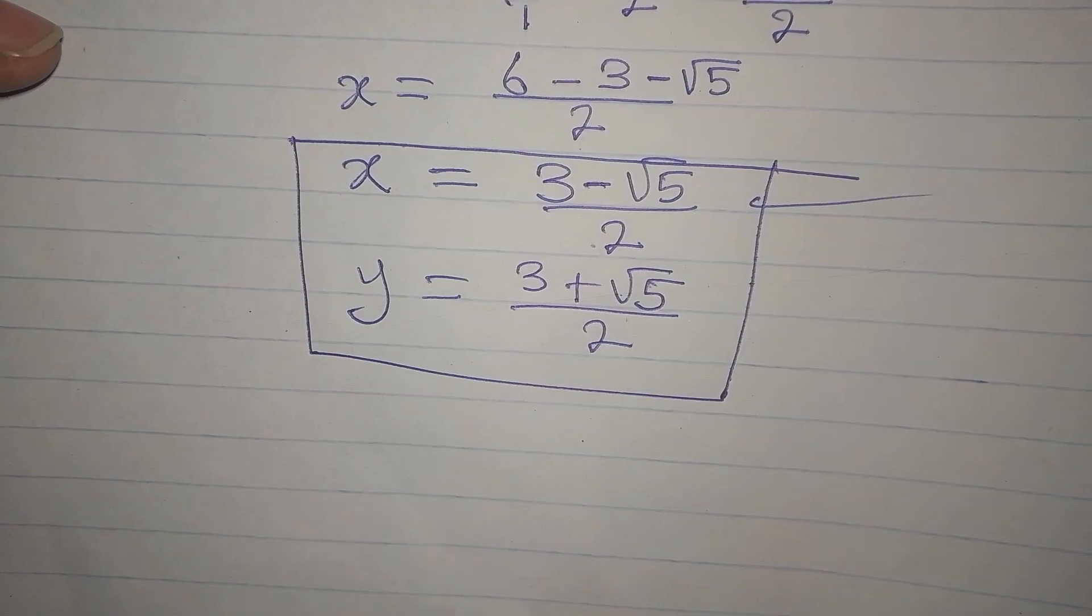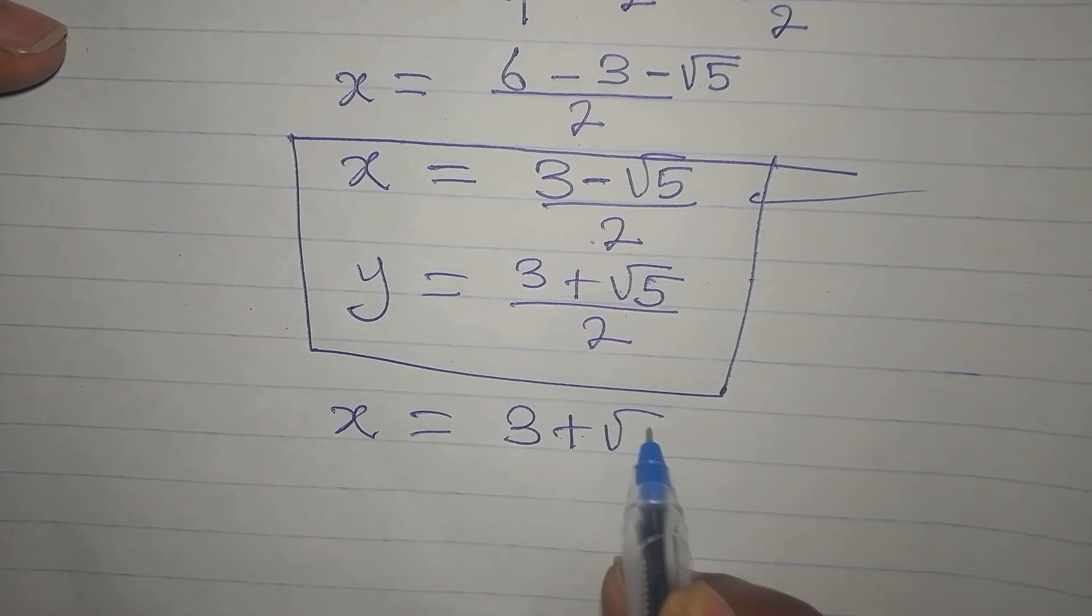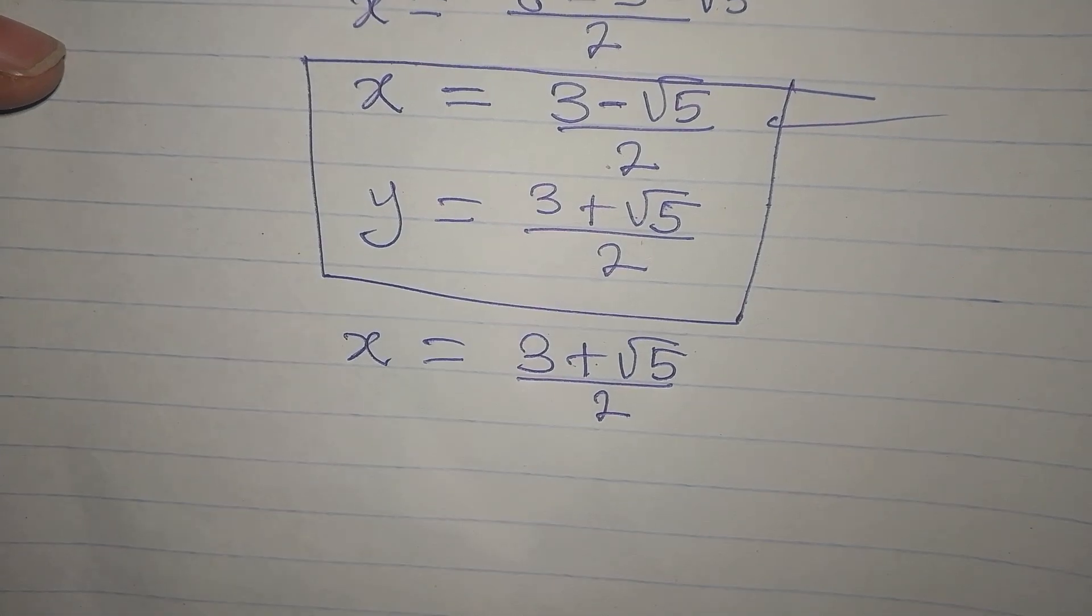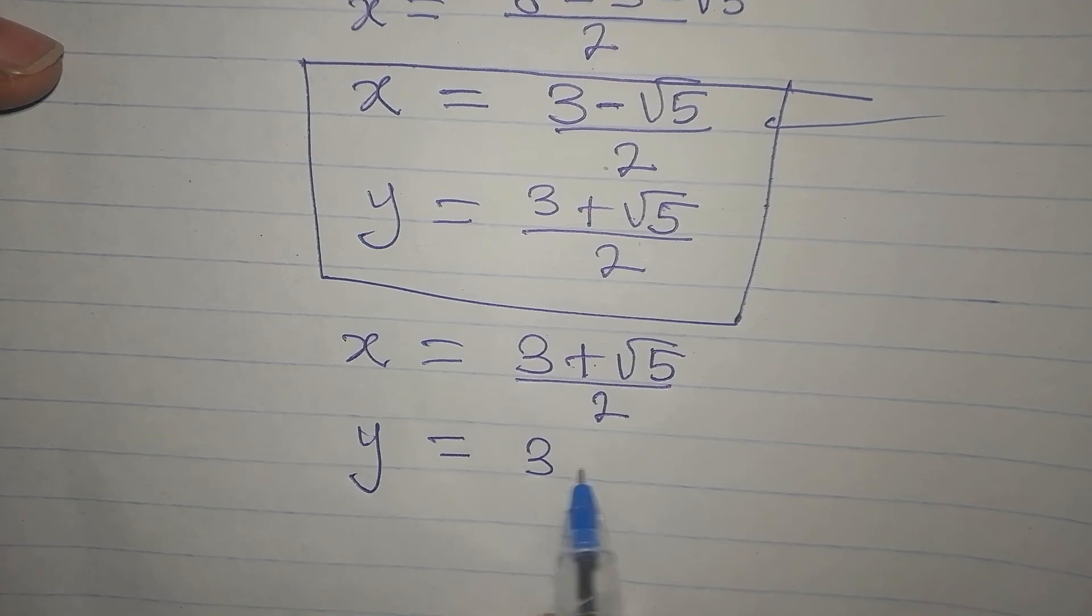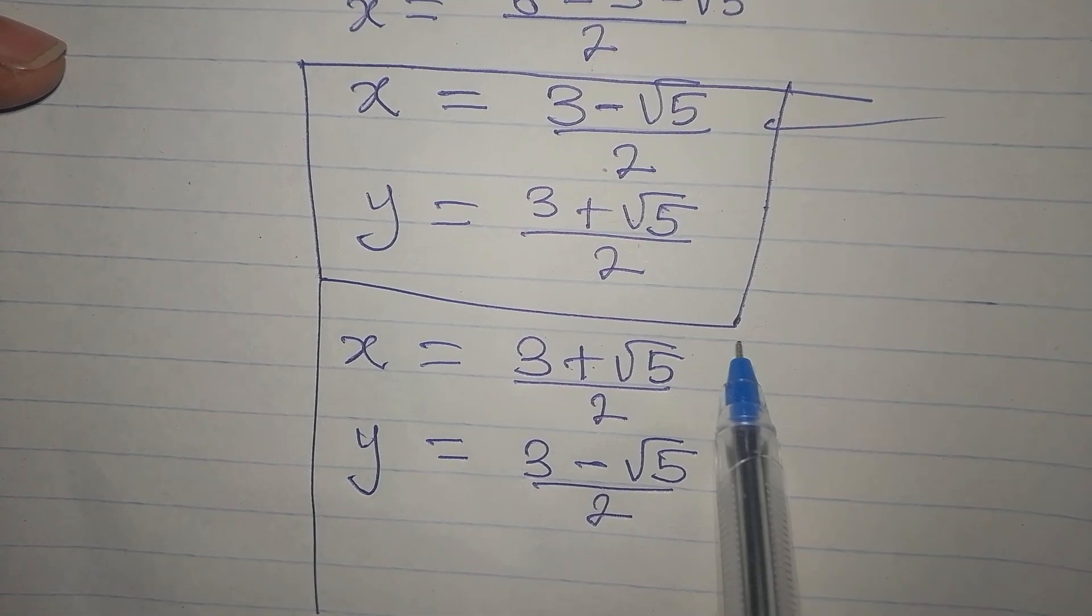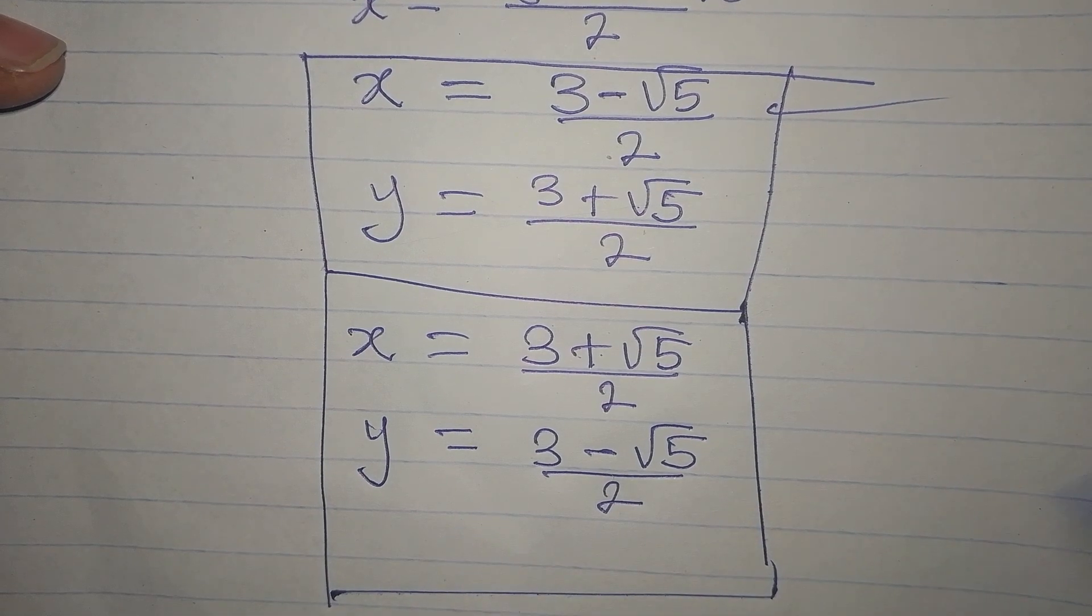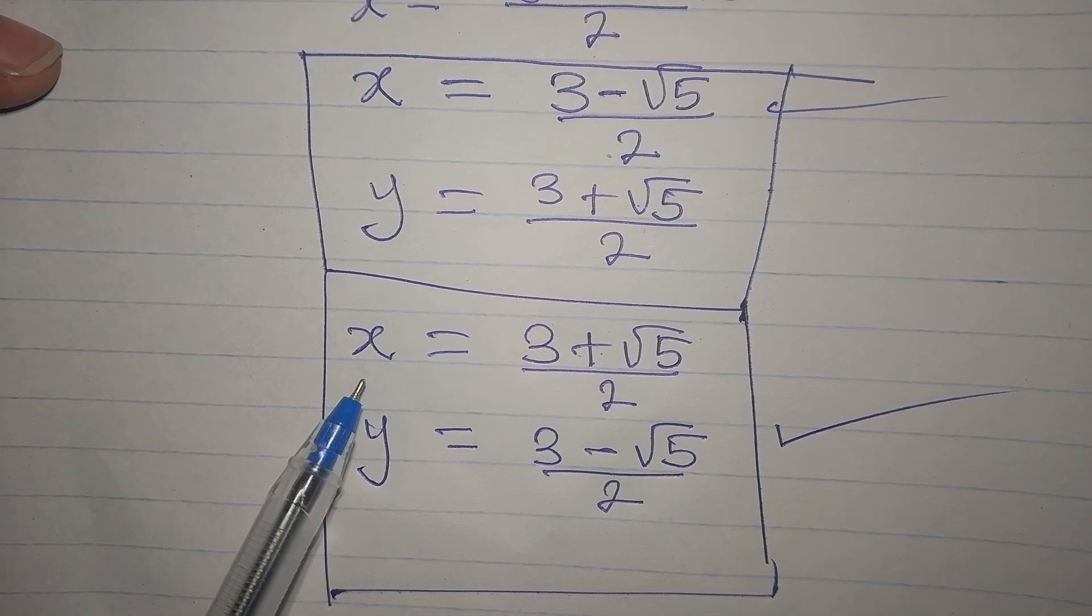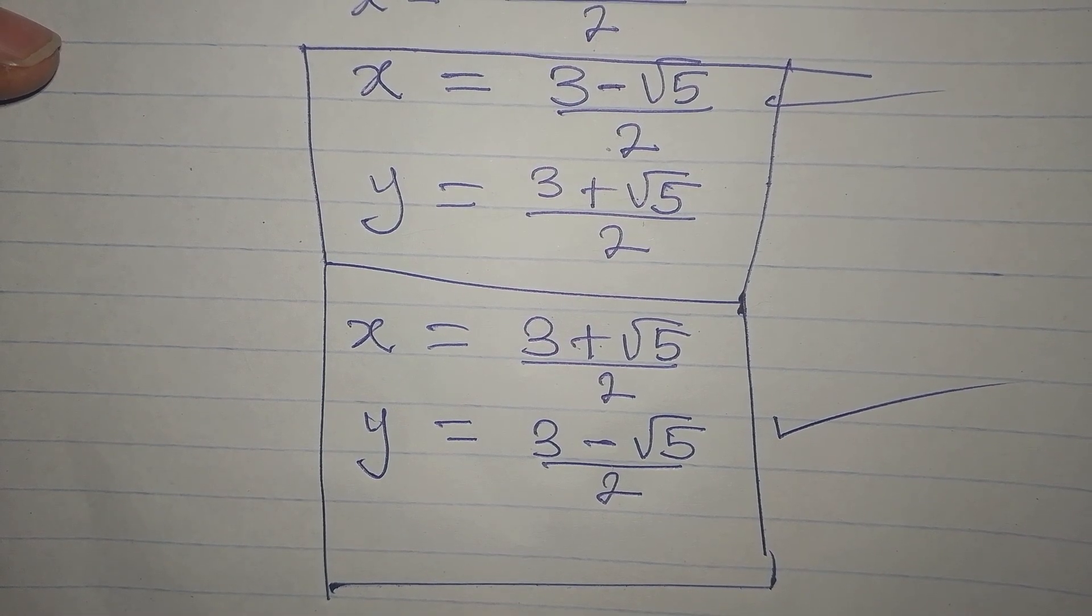So that means that the second value of x will be equal to 3 plus root 5 divided by 2. This will be the second value of x. And the second value of y will be the negative of this. Which will be 3 minus root 5 divided by 2. So by this, we have solved this completely. If you are not too certain, you can take your time and solve it. This is what you are going to get for the second value of x and y. Thank you for watching.